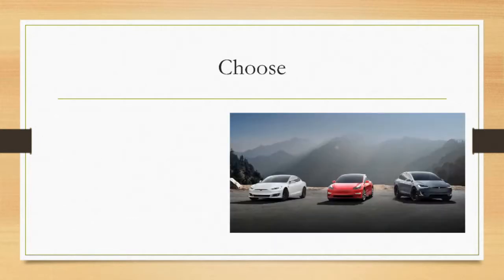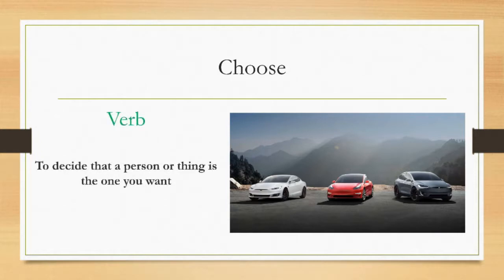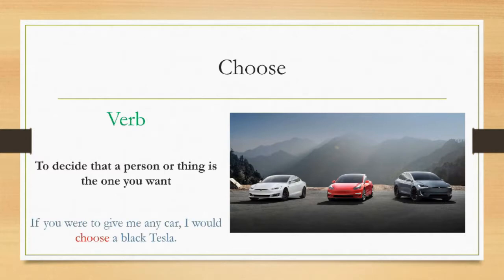Choose. Choose is a verb — a fi'l. It means to decide that a person or a thing is the one you want. For example, if you were to give me any car, I would choose a black Tesla or a gray Tesla. Which color would you choose? In Arabic we say yaktar.